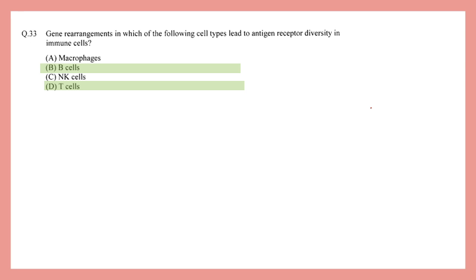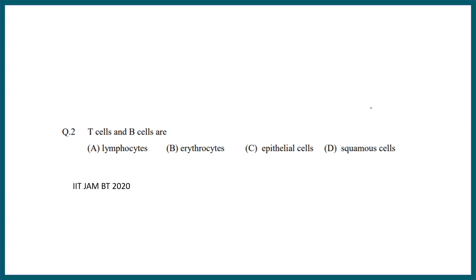These examples show that questions are asked from several cell types useful for the immune system and their functions. Cell types and organ types in the immune system is an important topic. In IIT JAM 2020, they asked: T cells and B cells are — lymphocytes, erythrocytes, epithelial cells, or squamous? The answer is lymphocytes — super easy.